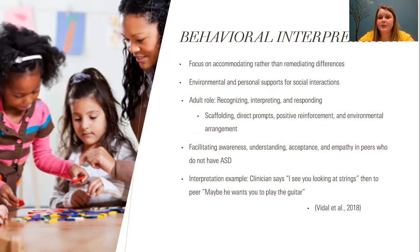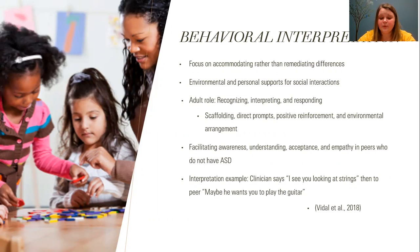Next, we'll talk about behavioral interpretation. This strategy focuses more on accommodating rather than remediating the differences in social behavior. It encourages environmental and personal supports for social interactions, like sensory-friendly spaces, reduced demands for eye contact, and access to other forms of communication if needed. The adult's role is to recognize, interpret, and respond to the communicative attempt — first recognizing the behavior or intent to communicate, then interpreting what it means and responding by narrating using uncertainty, such as 'I think' or 'maybe.' Finally, the adult can provide prompts and reinforcement for the child.